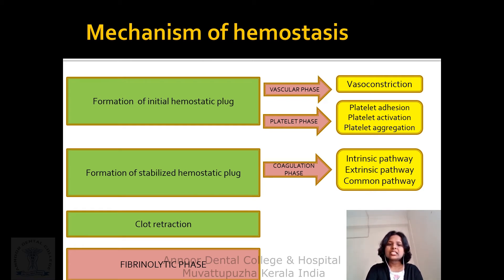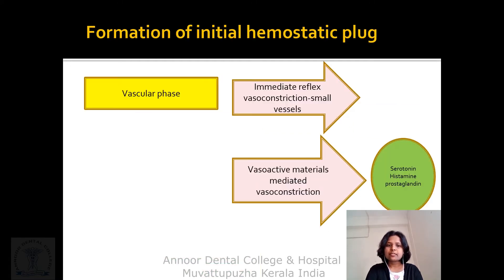Formation of the stabilized hemostatic plug occurs by means of the coagulation phase, involving the intrinsic pathway and extrinsic pathway. After a clot is formed, the clot will retract, followed by the fibrinolytic phase.